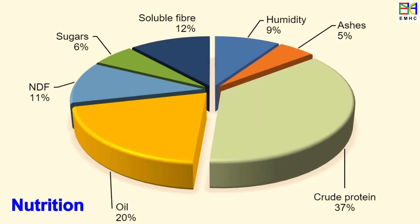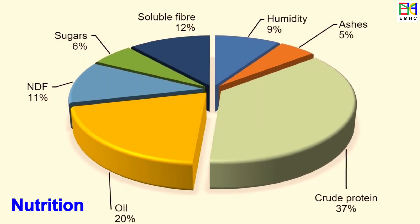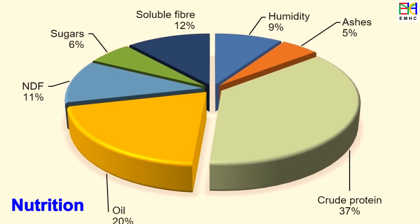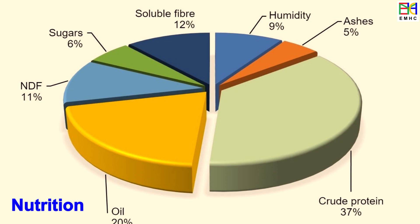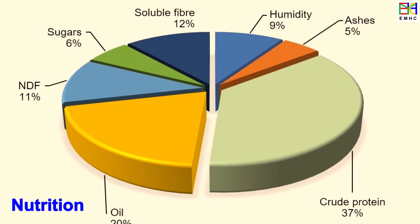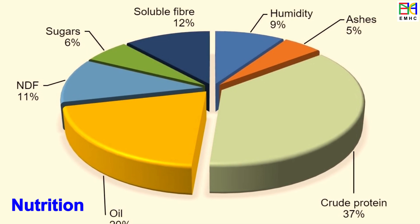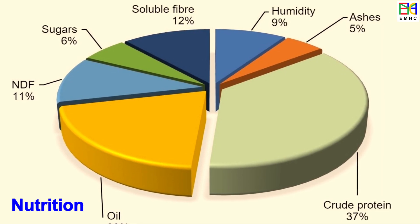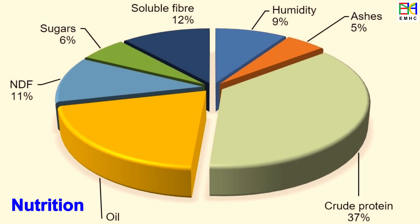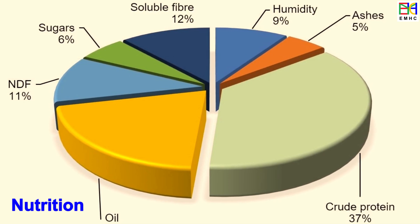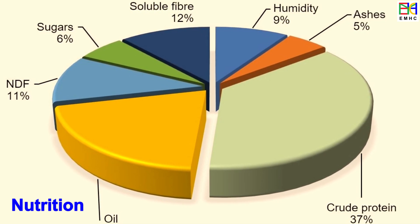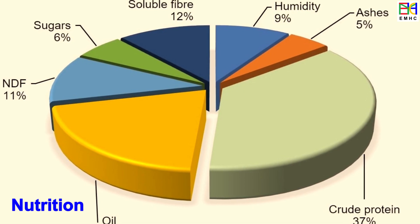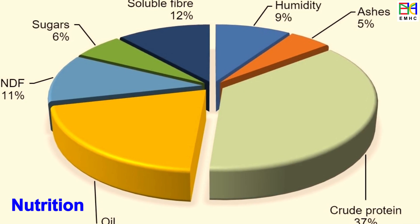Soybean is gluten-free and rich in protein, with a protein content of around 40% by weight. It is also high in fat and dietary fiber. Soybean contains a range of vitamins including vitamin K, vitamin C, and the B vitamins. It is also rich in minerals such as iron, calcium, phosphorus, potassium, and magnesium. However, allergy to soybean is common, and it is listed alongside other foods known to cause allergies, such as milk, eggs, peanuts, tree nuts, and shellfish.